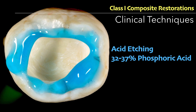Regarding etching: enamel and dentine are different substrates requiring separate systems. Enamel is highly mineralized with less water and no collagen, so we use total etch — the strongest acid — and can wash and dry enamel without problem. Dentine has a lot of water and collagen, so we don't dry it; we use a self-etch system that etches and bonds without washing and drying, which also limits post-operative sensitivity. So: total etch for enamel, self-etch for dentine, applied for about 20 seconds. The most common total etch is 37% phosphoric acid.